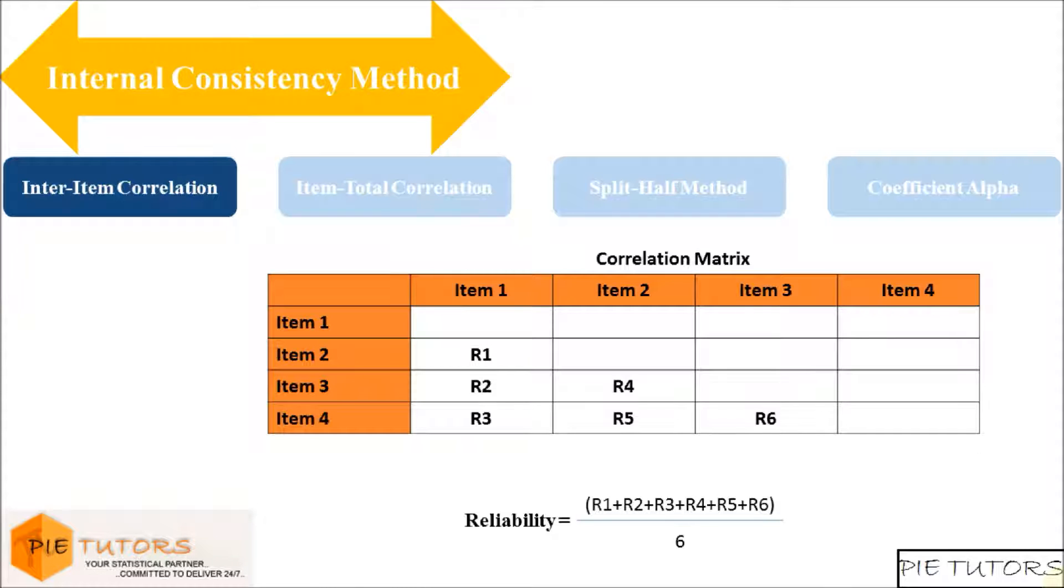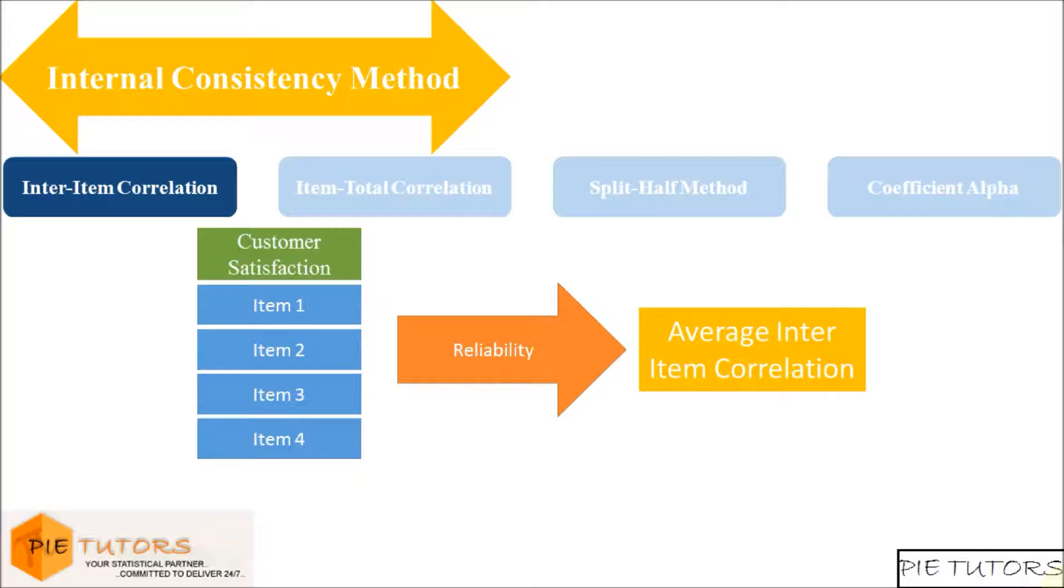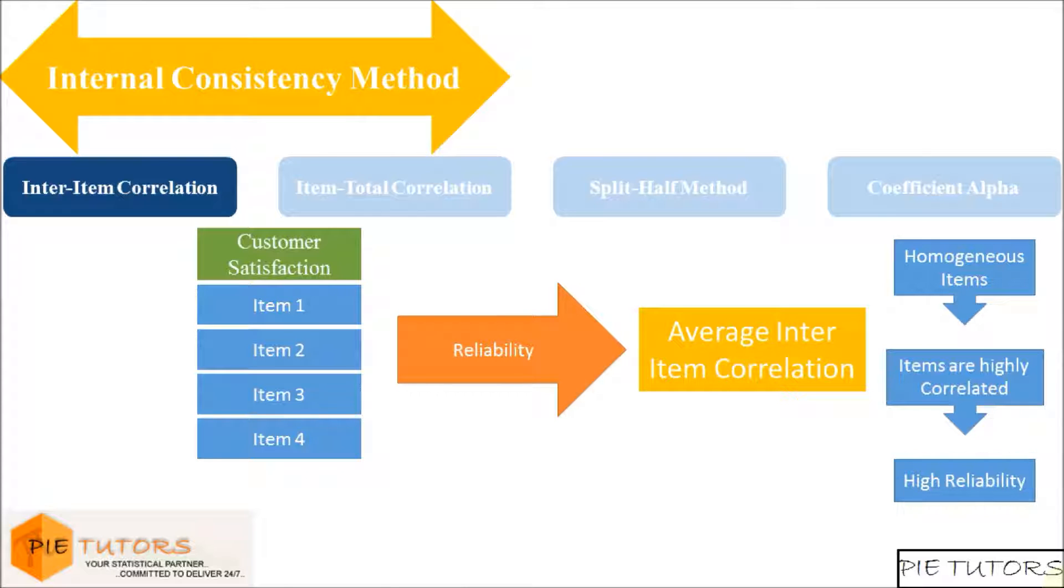For example, suppose that a measure of customer satisfaction consists of four statements regarding how satisfied the customer is with service, prices, etc. So the reliability of the measure can be assessed by using the inter-item correlations. If the measure is made up of homogeneous items, each item should be highly correlated with the other items, and the overall average inter-item correlation will be high.